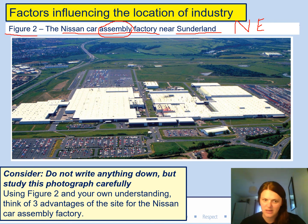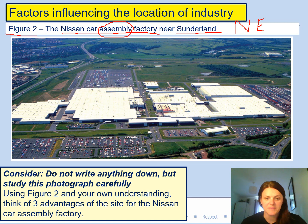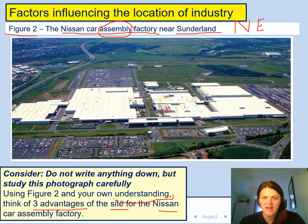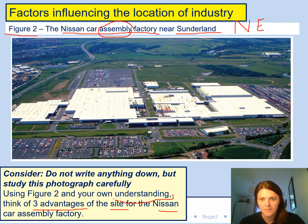I don't want you to write anything down, but I want you to study this photograph — really look at it, look at every corner of the picture. Using this picture and your own understanding from last lesson, think of three advantages of the site for this factory — what is really good about this location? For example, what is the relief like? The relief is the height of the land, the ground — is it flat, is it high, is it steep? And why would that mean it's a good site for this factory?